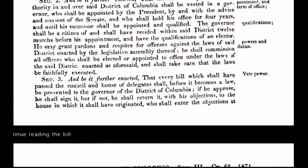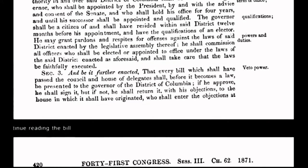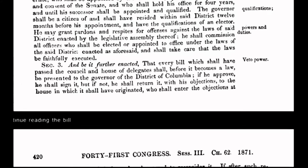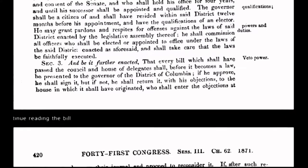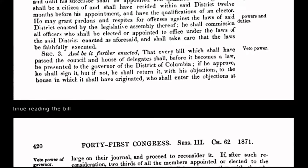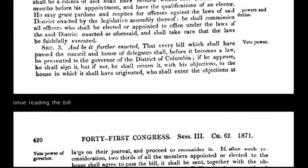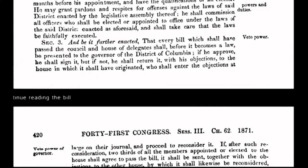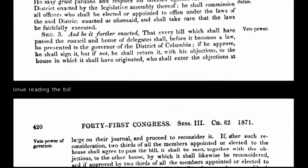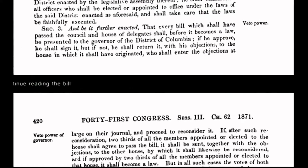What Congress did by passing the Act of 1871 was create an entirely new document — a constitution for the government of the District of Columbia, an incorporated government. This newly altered constitution was not intended to benefit the republic. It benefits only the corporation of the United States of America and operates entirely outside the original, organic constitution.